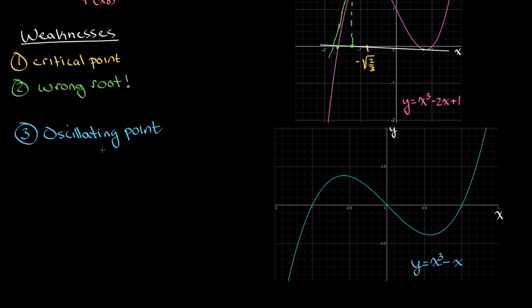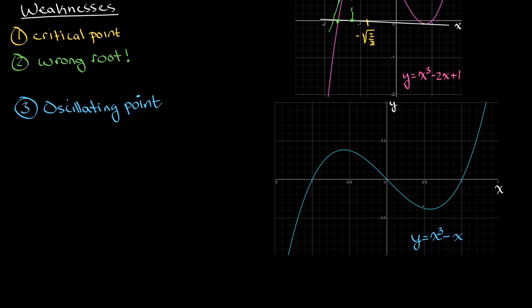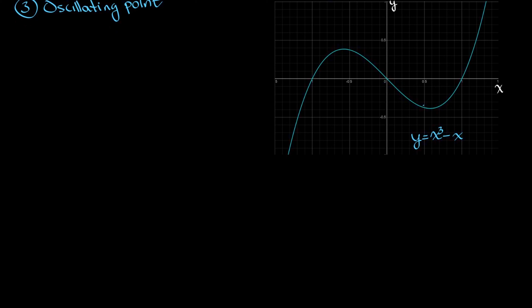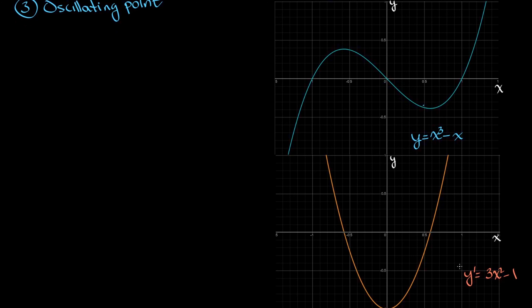In this class, when we ask you to find an oscillating point, it will only occur with functions like this — odd functions passing through the origin. Newton's method makes tangent lines whose slopes are given by the derivative. If we look at the derivative graph of y = x³ − x, which is 3x² − 1 — a parabola — we can see that symmetric points like x = 1/2 and x = −1/2 have the same slope value on the derivative graph.